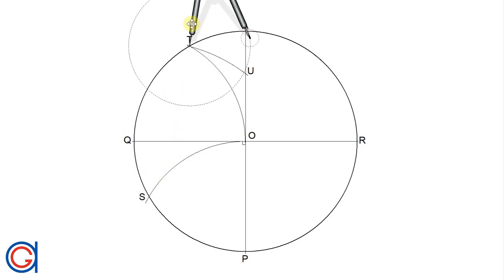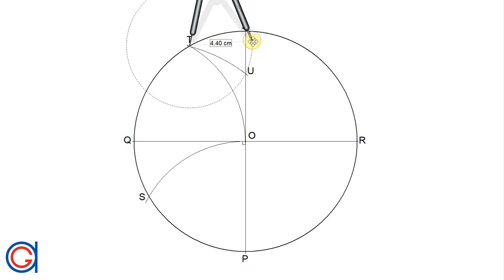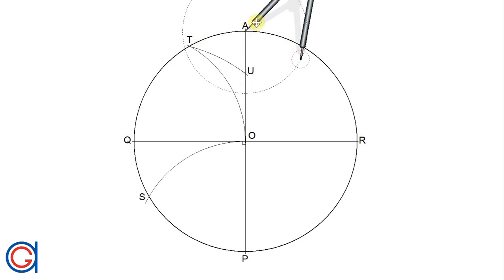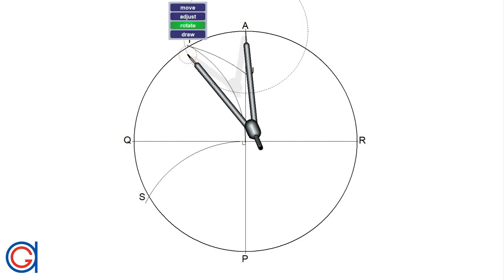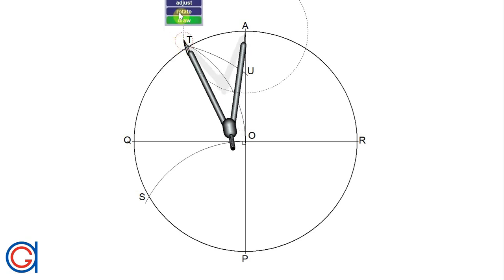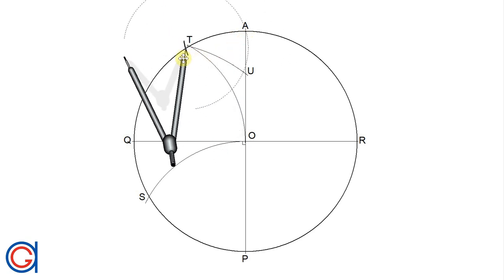The straight line distance between T and U is going to be the chord length for the 11 divisions that we want to put onto the circumference. Setting our compass to the length TU, we transport it onto the circumference starting with point A, and setting our compass on point A we describe our first arc, as can be seen here.